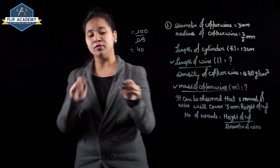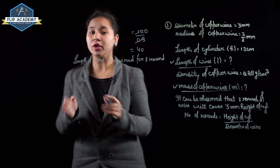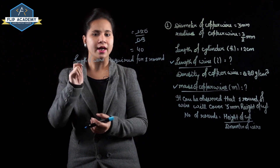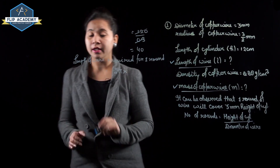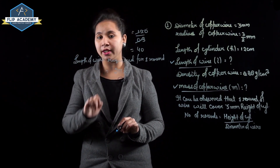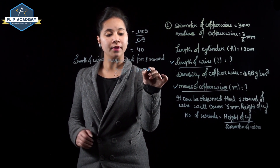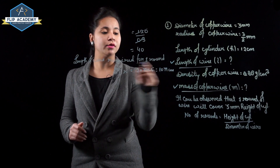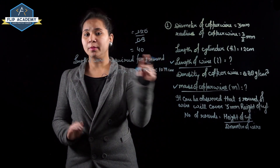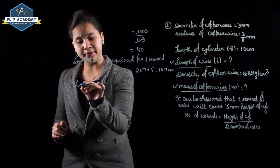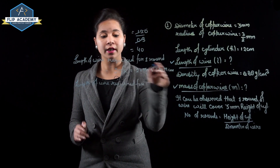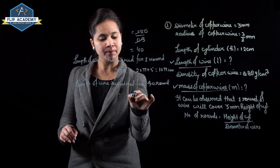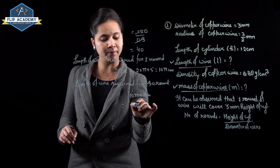Length of wire required for one round equals the circumference of the cylinder. Circumference = 2πr. Diameter of the cylinder is 10 cm, so r = 5 cm. Circumference = 10π cm. For 40 rounds, length = 10π × 40 = 400π cm, which equals 1256 cm approximately. But here stated as 400π cm ≈ 1256 cm. The calculation gives 405 cm as noted.